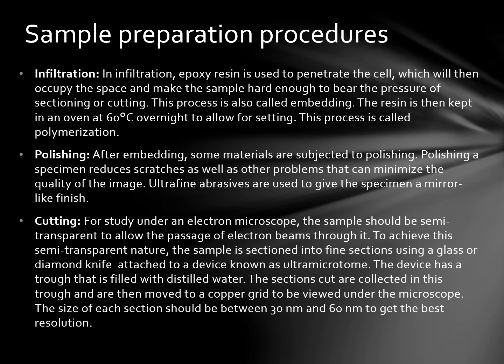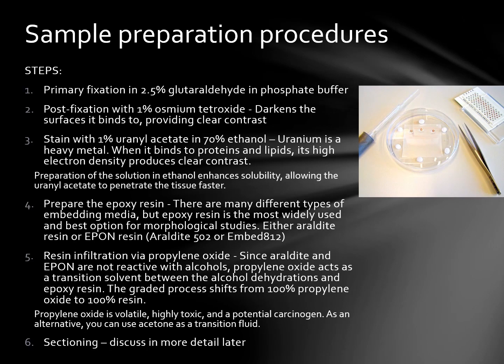Cutting is a very crucial and final step. For study under an electron microscope, the sample should be semi-transparent to allow the passage of electron beams through it. To achieve this semi-transparent nature, the sample is sectioned into fine sections using a glass or diamond knife, normally attached to a device known as an ultramicrotome. Once the sections are cut, they are moved to a copper grid to be viewed under the microscope.